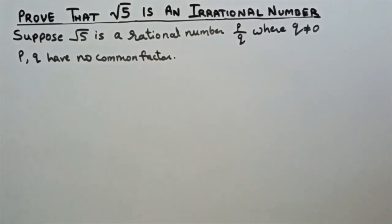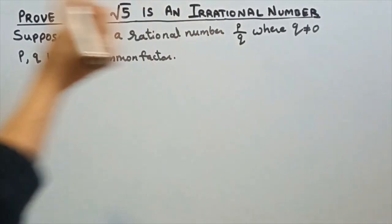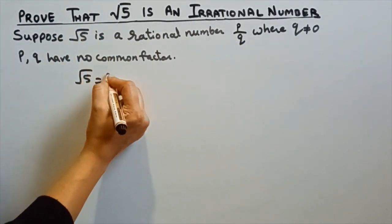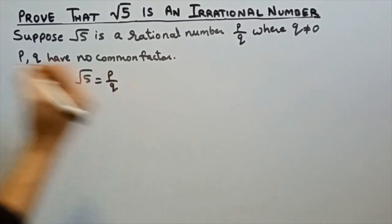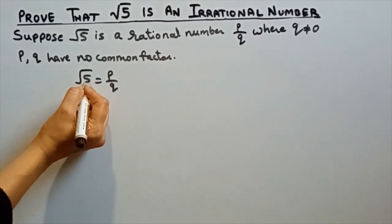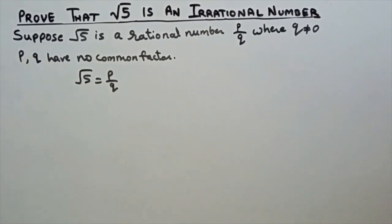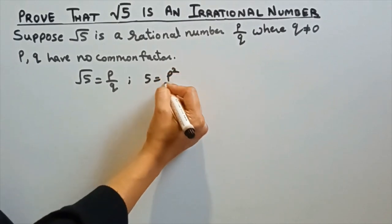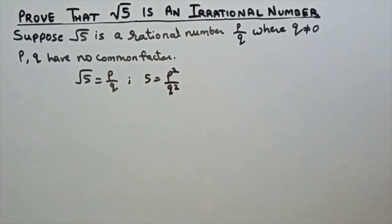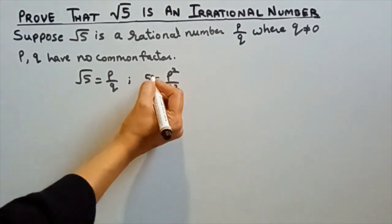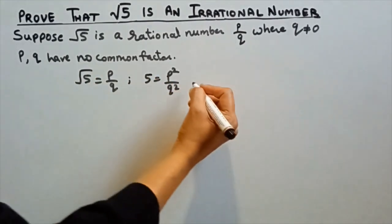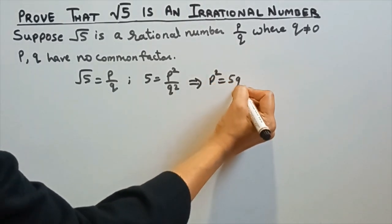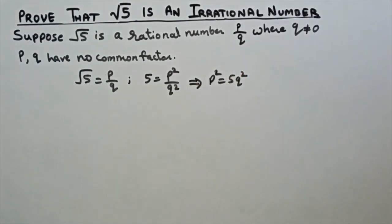Since we are saying that root 5 is in the form of p by q, we write root 5 is equal to p by q. To remove the root sign, I am squaring both sides, so this becomes 5 is equal to p squared by q squared, as root and square cancel each other.